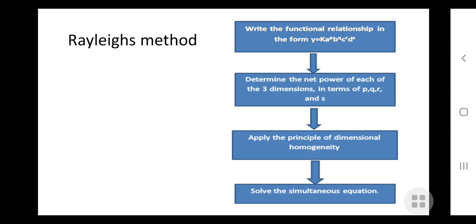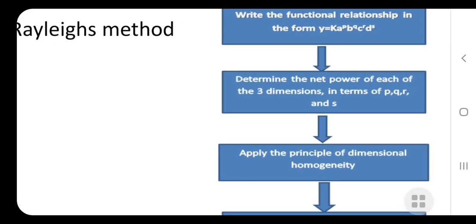But variables should not be more than three to four, otherwise Buckingham Pi method will be used. Rayleigh method has some limitations because if the number of variables is greater than three or four, it becomes very complicated. Here I am showing the Rayleigh method procedure. First, you have to write the functional relationship in the form y equals k times a to power p, b to power q, c to power r, and d to power s.